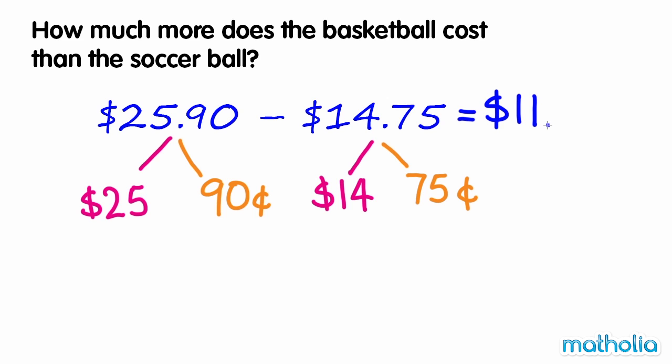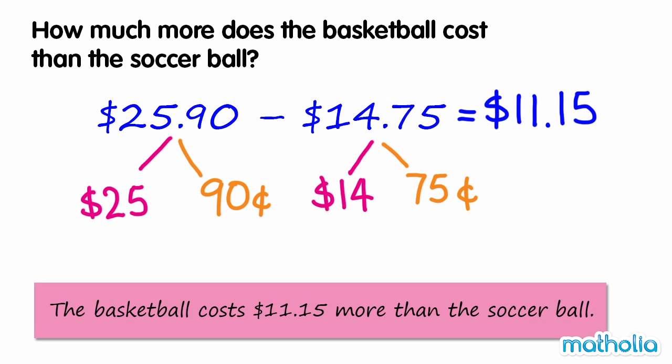Next, subtract the cents. $0.90 minus $0.75 is $0.15. So $25.90 minus $14.75 is equal to $11.15. The basketball costs $11.15 more than the soccer ball.